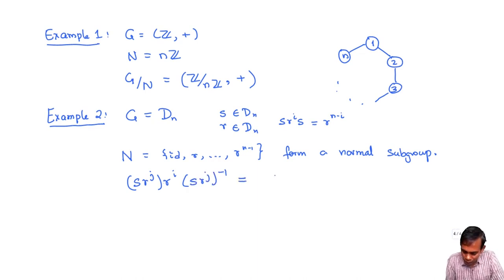Let's just work this out. I get SR to the J R to the I, and then I get SR to the J inverse is R to the J inverse which is R to the minus J, and then S inverse which is S R to the I plus J minus I S which is R to the N minus I. So this again belongs to N, and therefore N is a normal subgroup.